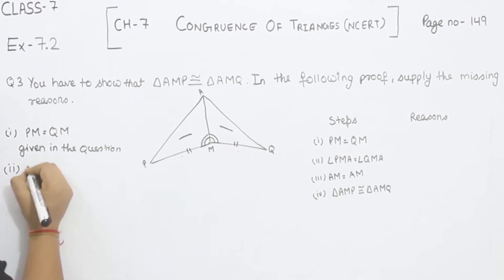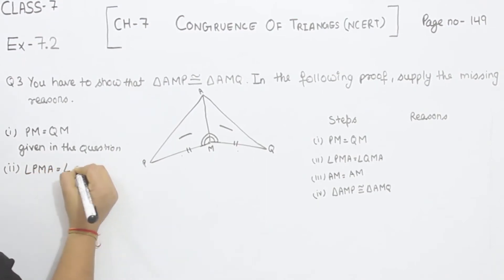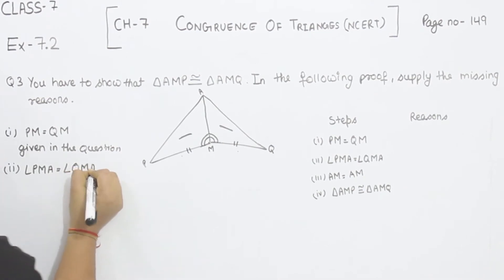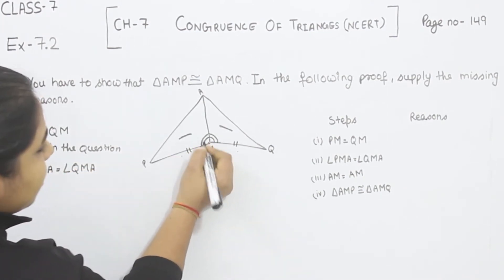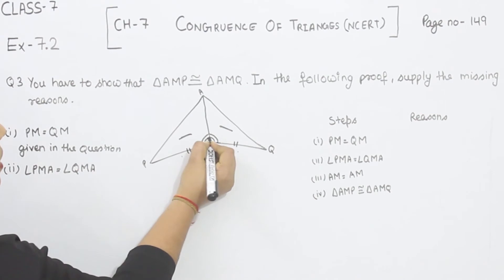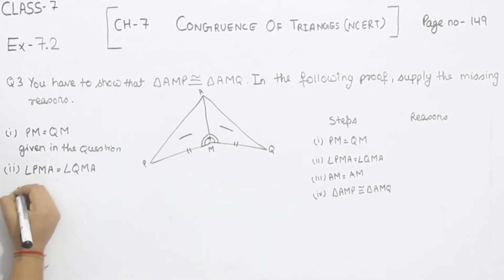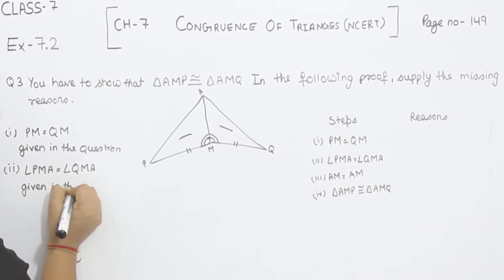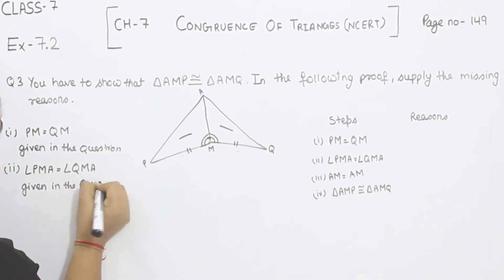Now comes to the second one. Angle PMA is equal to angle QMA. This one is also given in the question. Talking about this angle, so we are going to write here, given in the question.